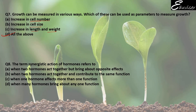Question number 8: The term synergistic action. If you know the meaning of synergistic action, you'll know the answer. Synergistic effect means when two or more hormones work together to bring about one function — basically they can do more work than an individual hormone. For example, ethylene and auxin together have a synergistic effect on flowering. So B is the correct answer: when two hormones act together and contribute to the same function. Answer for question 8 is B.